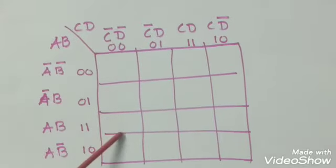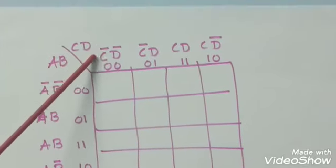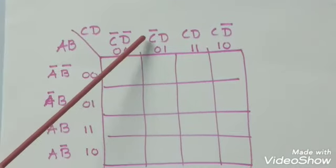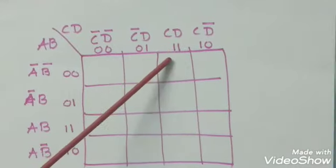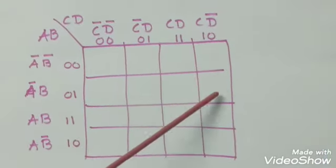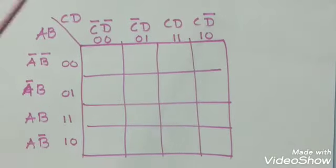Write 0, 0 in the first column. Value is C bar, D bar. 0, 1 in the second column. C bar, D. 1, 1 in the third column. That is C, D. 1, 0 in the fourth column. C, D bar.